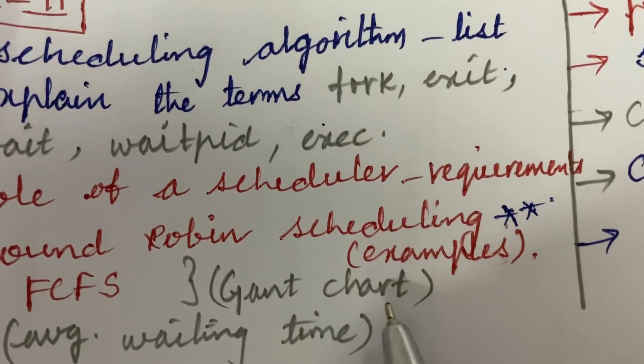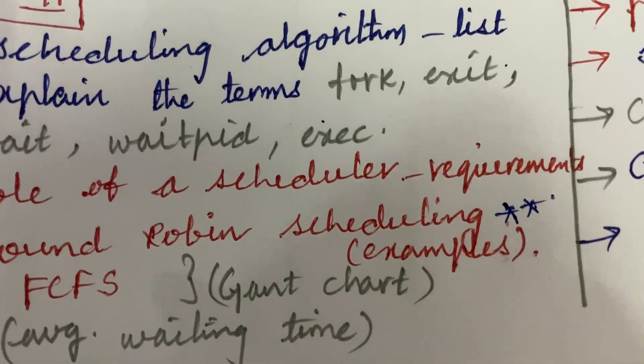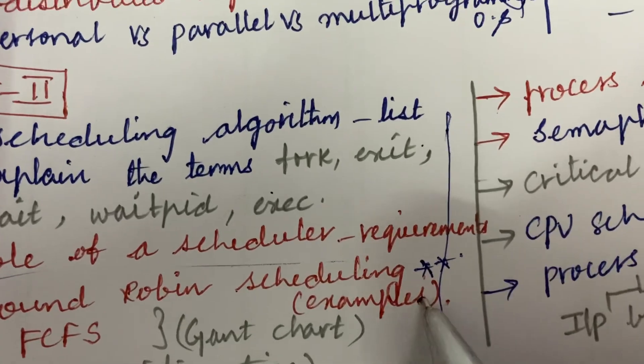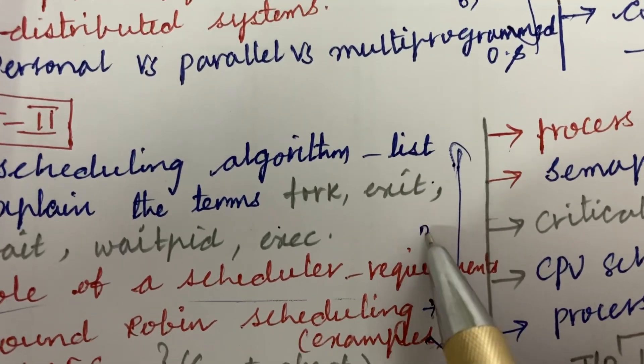Certain problems related to these two concepts, that is FCFS, they will be asking you to work out the Gantt chart and give the average wait time. Please do work out this, may be one of the gunshot questions.